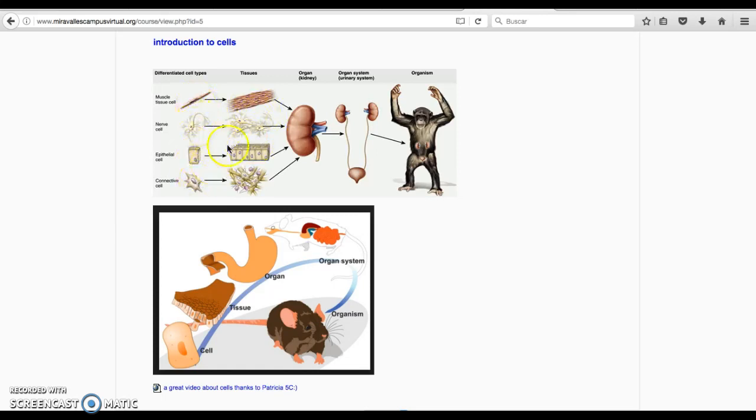So different cells form different tissue. All together are forming in this case a kidney. A kidney is one of these two organs we people have to filter our blood and then clean it.